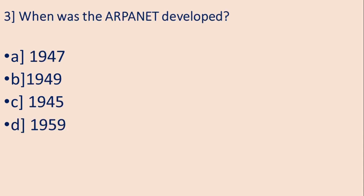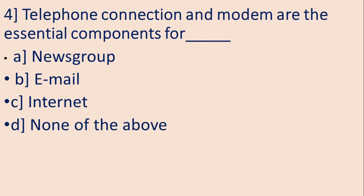Now the next question is: When was the ARPANET developed? A is 1947, B is 1949, C is 1945, D is 1959. Correct answer is B, 1949. Now next question is: Telephone connection and modem are the essential components for A, Newsgroup, B, Email, C, Internet, D, None of the above. So the correct answer is C, Internet.